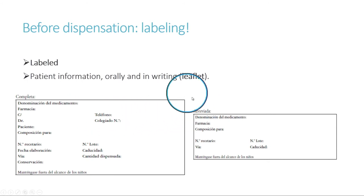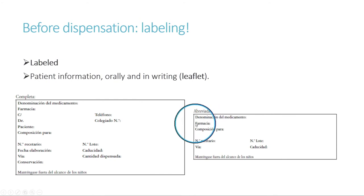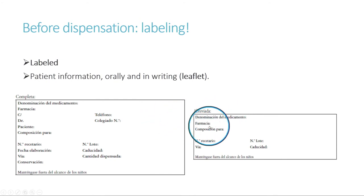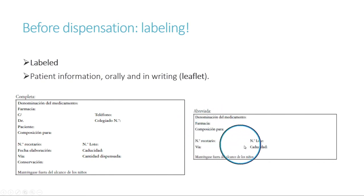If the packaging material is too small, then we have an example of a smaller label that is also official and we can use. Here we have less information, as you can see, but it is also completely valid for our compounded formulation.